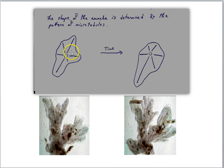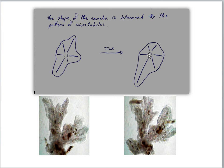If amoeba only had these two proteins — microtubules and choppers — the shape changes would be just random, as the choppers and microtubules randomly bumped around in the cytoplasm. But that's not what we see under the microscope. We see amoeba pursuing prey — that is more like a goal-directed change in shape. So there's something missing in our story: they pursue and capture prey.